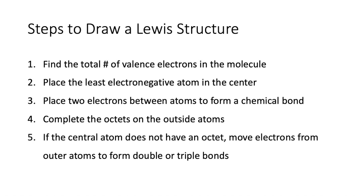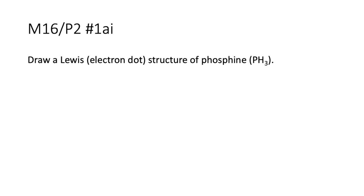Step five is if the central atom does not have an octet move electrons from outer atoms to form double or triple bonds and so step five applies if you still haven't finished your Lewis structure but you haven't completed all the octets and you have no more valence electrons so what you're going to do is shift around some of the ones you already have on the outside atoms to form those double or triple bonds because the electrons are shared and so that frees up a couple more for you to place in different spots.